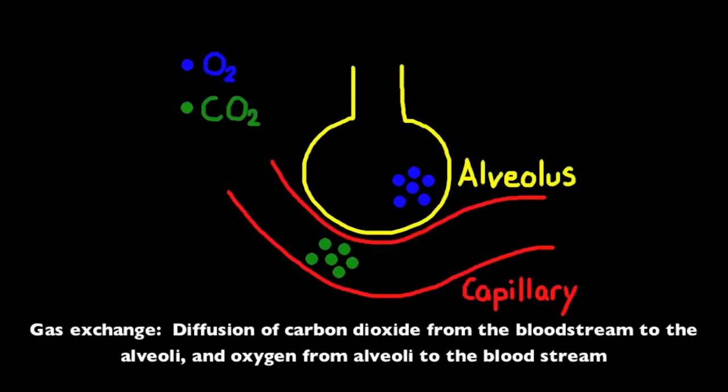Gas exchange is the process of oxygen in the alveolus, a structure in the lungs, diffusing into the bloodstream, while at the same time carbon dioxide from the bloodstream diffuses into the alveolus.